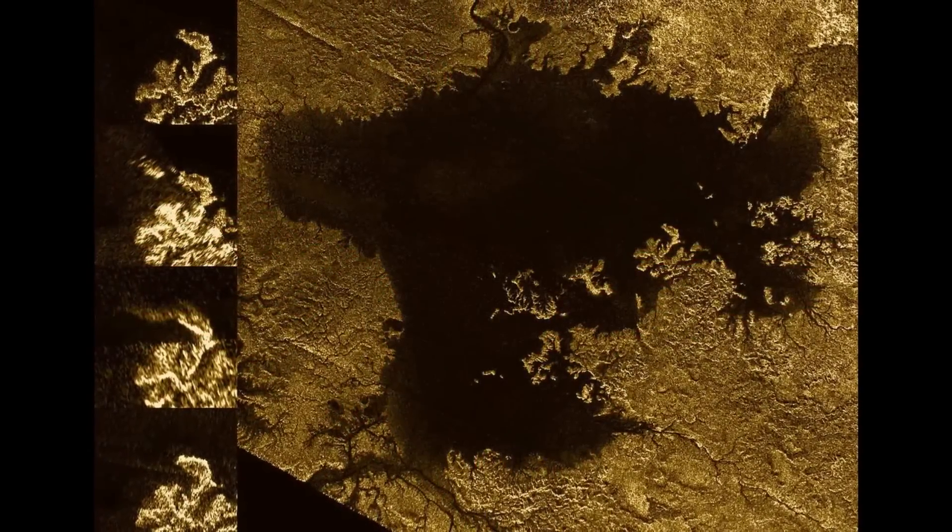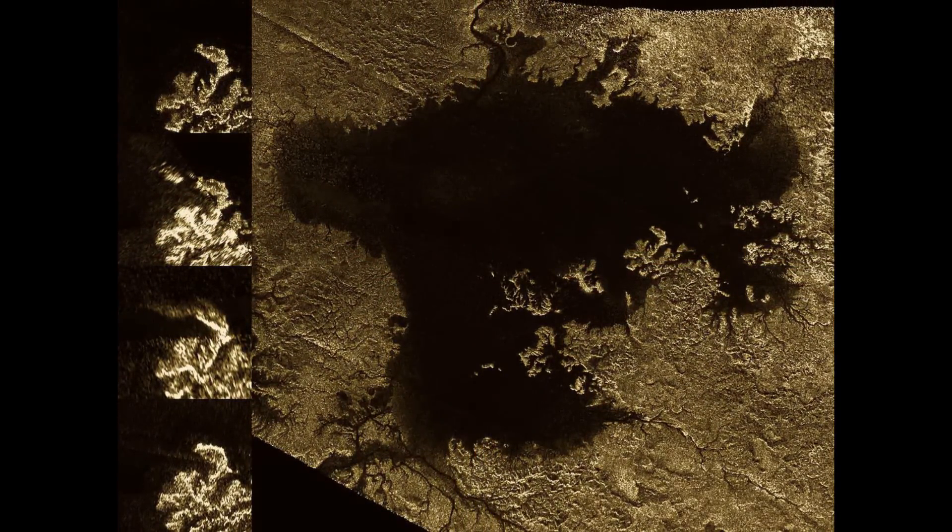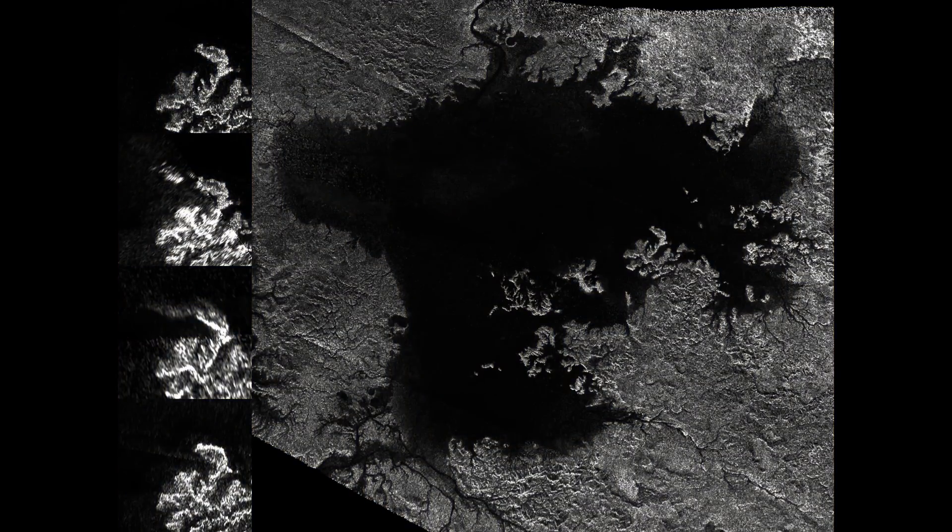Now, this is not exactly what Cassini initially captured. These photos are all colorized. The original images captured through radar don't have color.